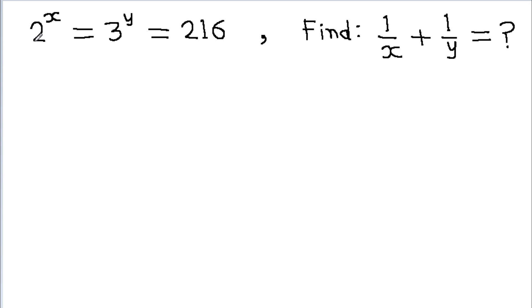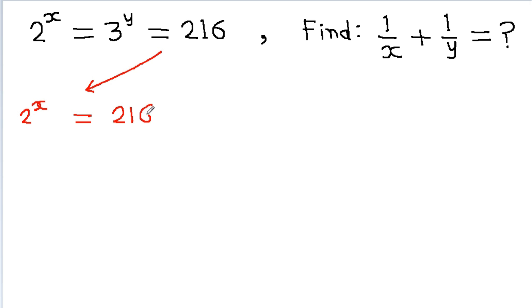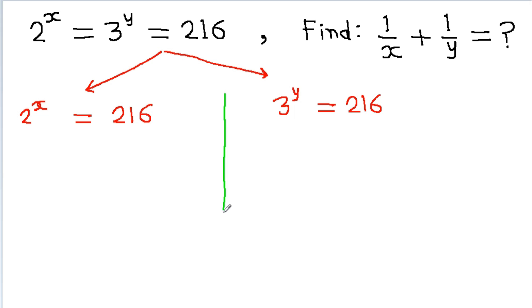In this video, we have given that 2 to the power x is equal to 3 to the power y is equal to 216, and we have to find the value of 1 by x plus 1 by y. So from the given equation, we can generate two equations: one equation will be 2 to the power x is equal to 216, and the second equation will be 3 to the power y is equal to 216.